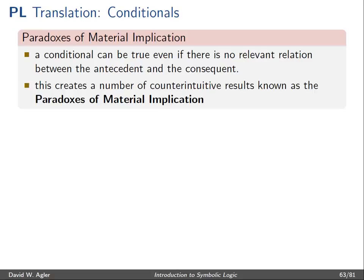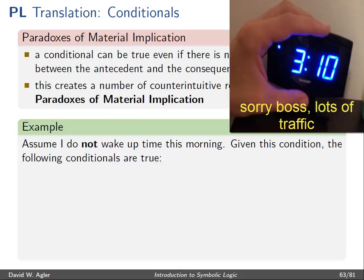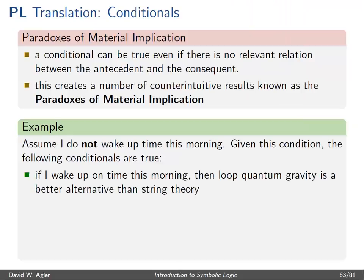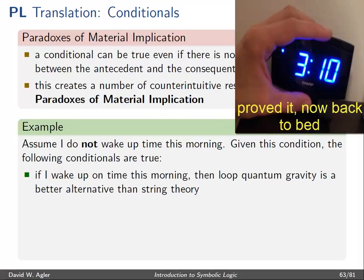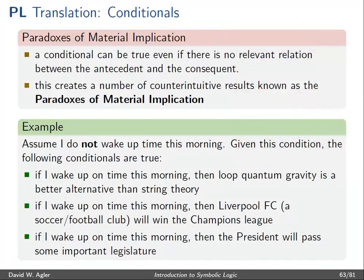A conditional P right-arrow Q can be true even if there is no relevant relationship between the antecedent P and the consequent Q. This creates counterintuitive results known as the paradoxes of material implication. For example, suppose I do not wake up on time this morning — say I wake up at 3 p.m. when I needed to wake up at 8 a.m. Given this, the following conditionals would be true: 'If I wake up on time, then loop quantum gravity is a better alternative than string theory'; 'If I wake up on time, then Liverpool FC will win the Champions League'; 'If I wake up on time, then the president will pass some important legislation.'